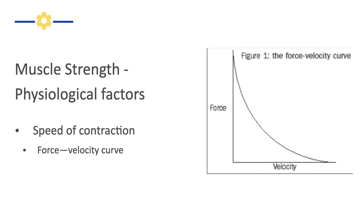Muscle strength is also affected by the speed of contraction. You can develop more force at slow speeds than you can at fast speeds. This force-velocity curve is a hallmark of muscle physiology. For the force of the muscle to be high, we need to have a low velocity. If we're moving at a very high rate of speed, we can't generate as much force. So there's a trade-off — the faster we move, the less force the muscle can develop, and vice versa. The forces we produce during very fast motions may be relatively small, whereas at slower motions we can generate more force.